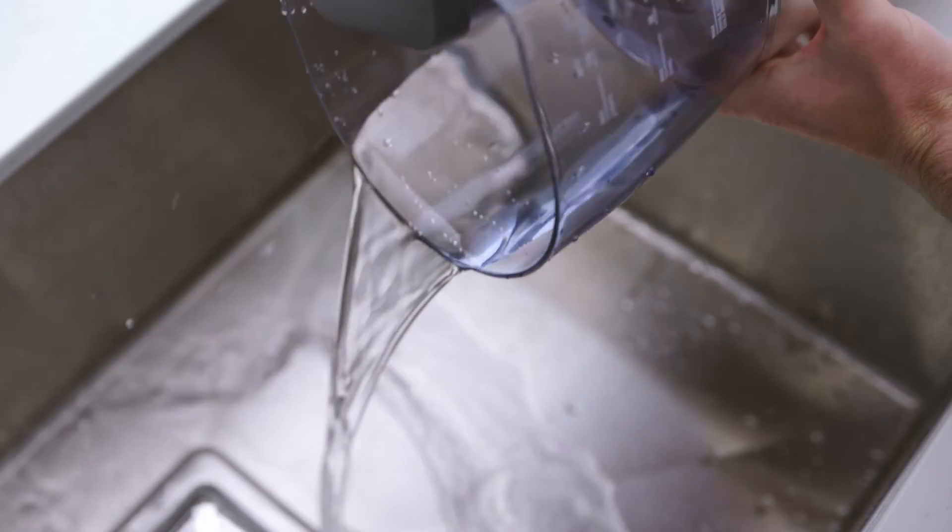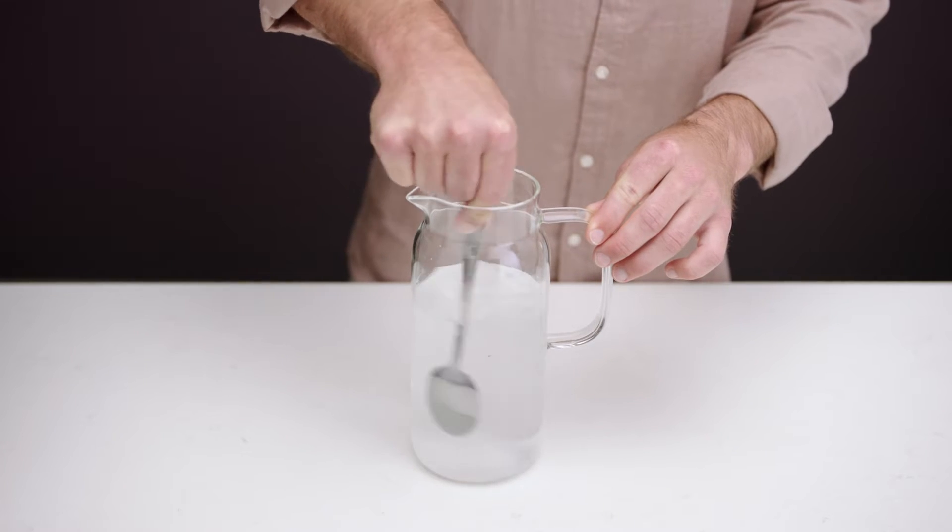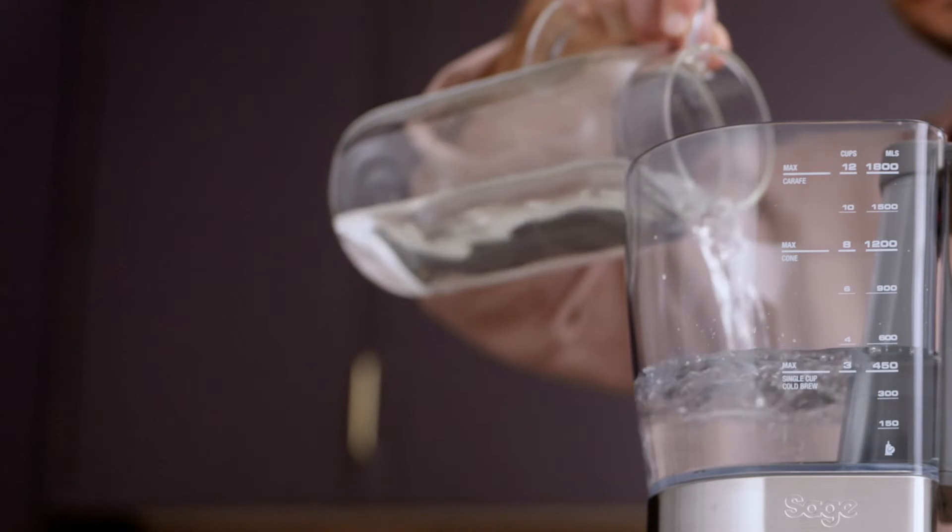Empty the water tank and remove the water filter. Dissolve one packet of the descaler with one liter of warm water and pour the solution into the water tank.